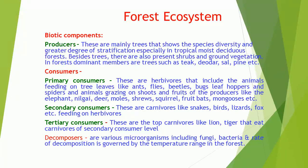Secondary Consumers: These are carnivores like snakes, birds, lizards, fox, etc., feeding on herbivores. Tertiary Consumers: These are the top carnivores like lion and tiger that eat carnivores of the secondary consumer level.